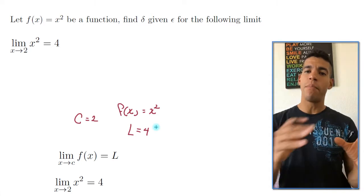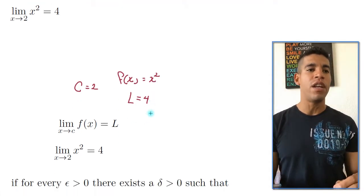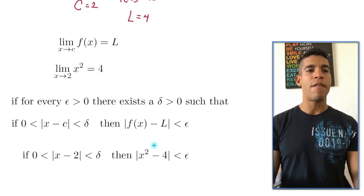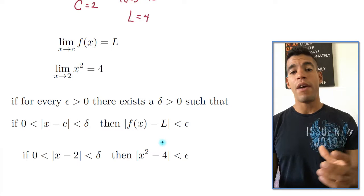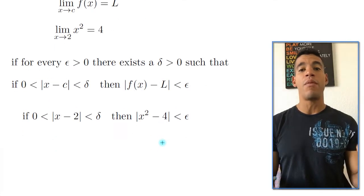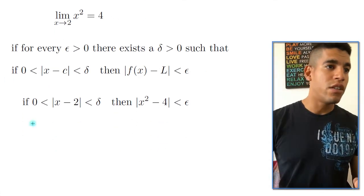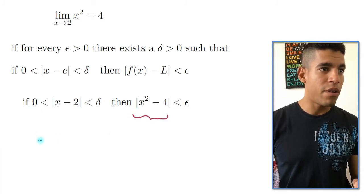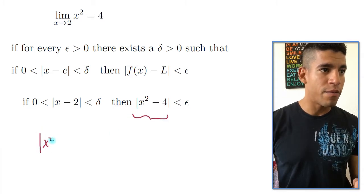And once you have that, you can plug it in inside the definition. And it's going to look something like this. Substitute c for 2, L for 4, f of x for x squared. And very similar to the previous video, we're going to start with the conclusion. So in this case, will be this part. So the absolute value of x squared minus 4.